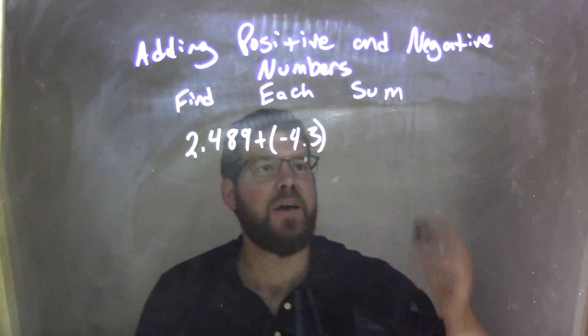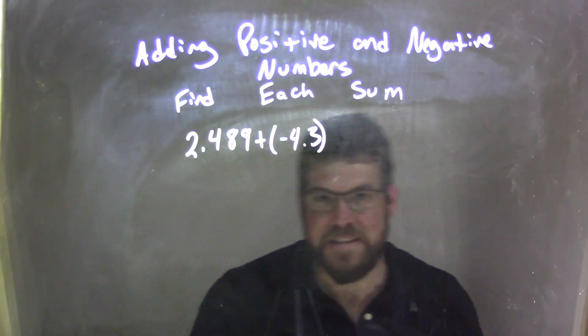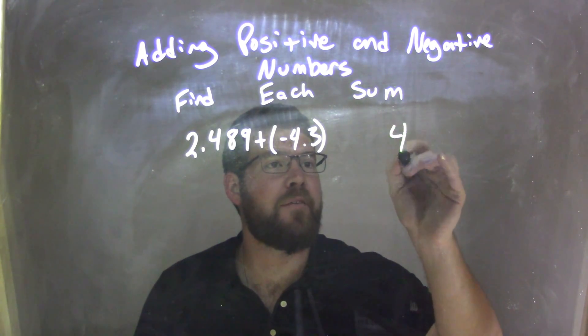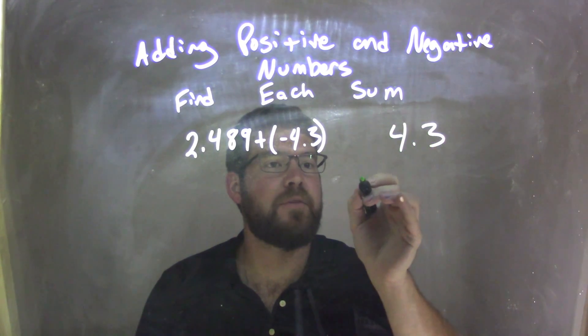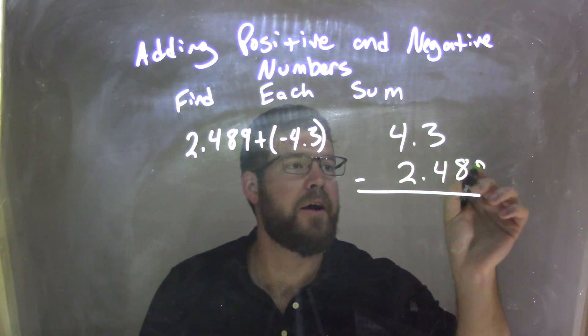Now, to do this traditionally, the way I do it - and it might be different than what your teacher teaches you, to be honest - is I write it like this. I will have my 4.3, and I will subtract 2.489 from 4.3.